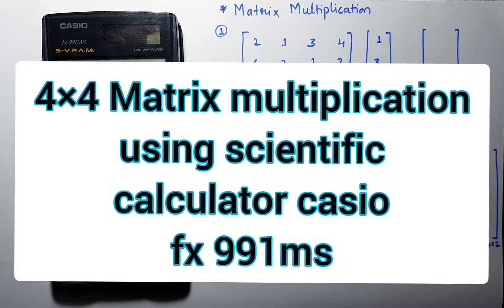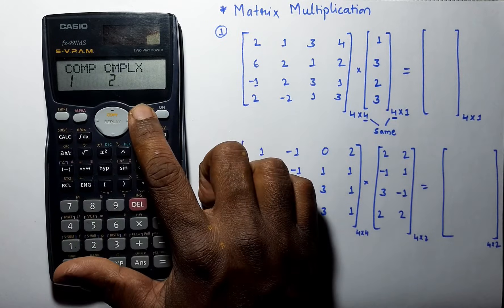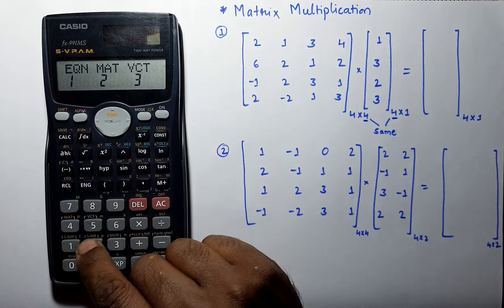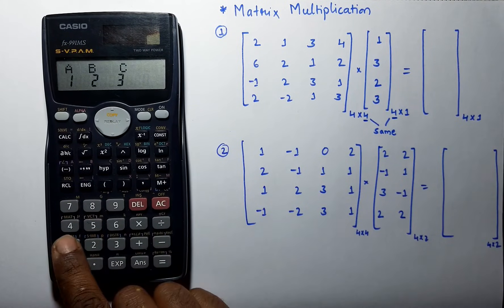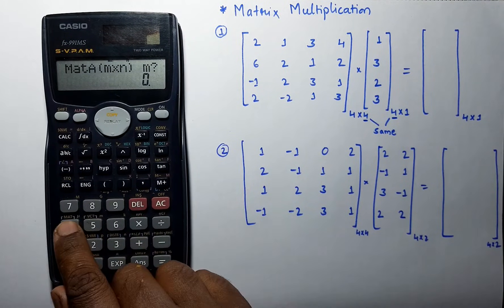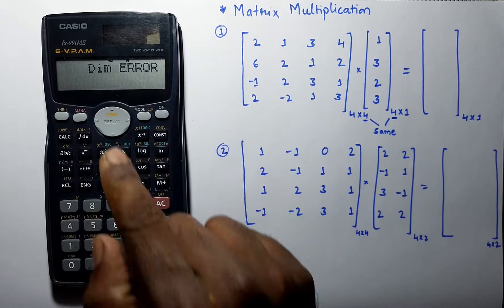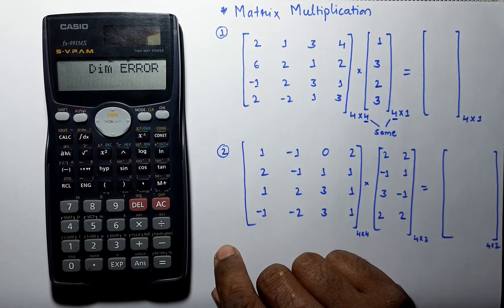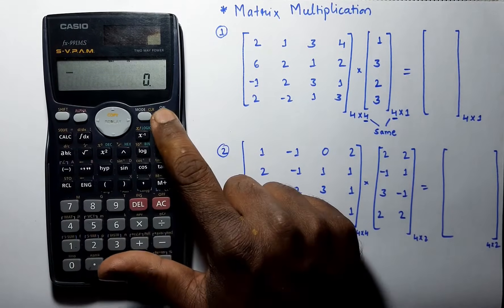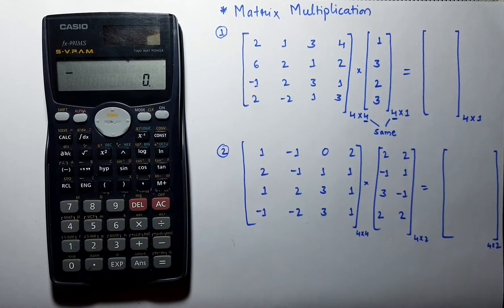In this video we will see how to multiply a 4x4 matrix using a scientific calculator fx-991ms. We go to mode and set the calculator into matrix mode, then select matrix, go to dimension, and select matrix A. Enter the matrix order as 4 — but it shows a dimension error because this calculator can only solve up to 3x3 matrices. So we come back to normal mode.